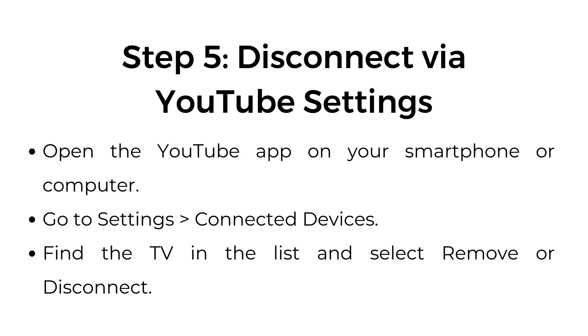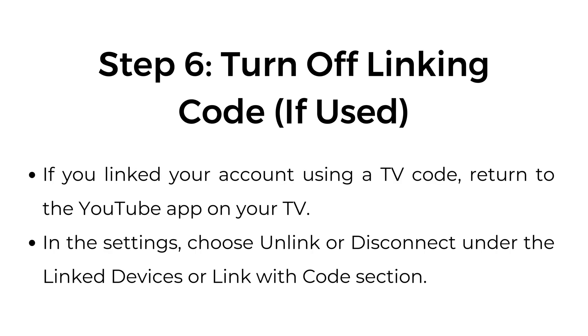Step 5: Disconnect via YouTube settings. Open the YouTube app on your smartphone or computer. Go to settings, then connected devices. Find the TV in the list and select remove or disconnect.